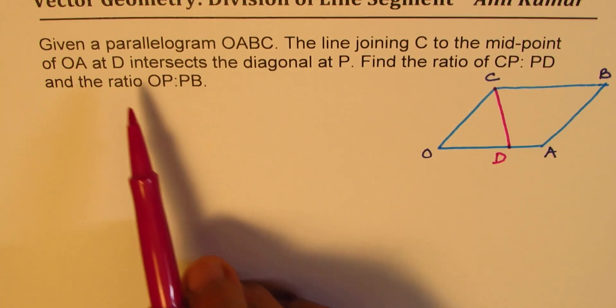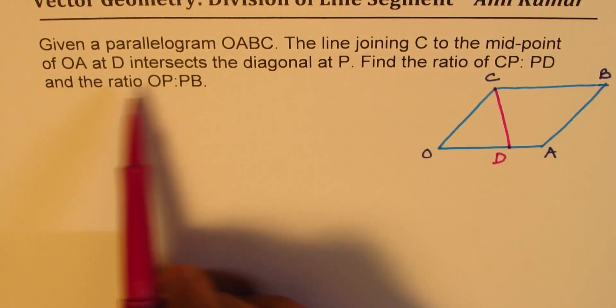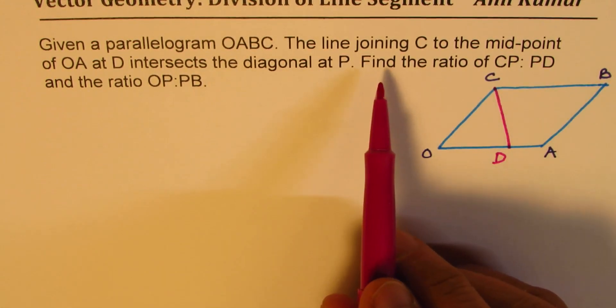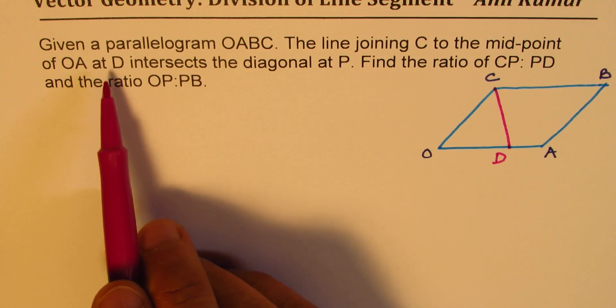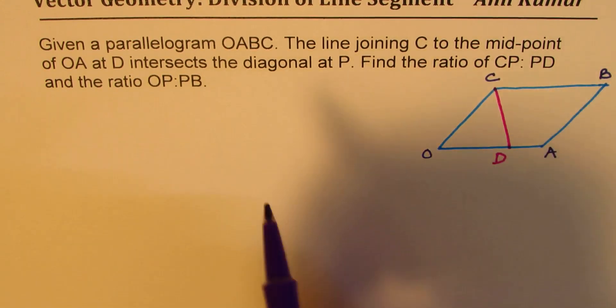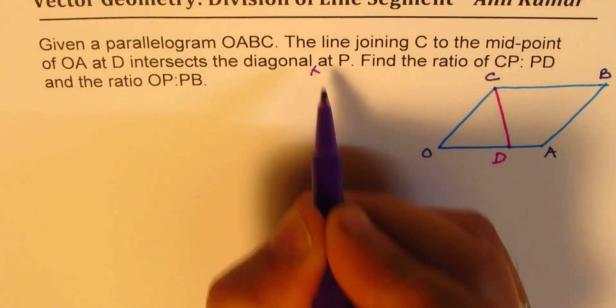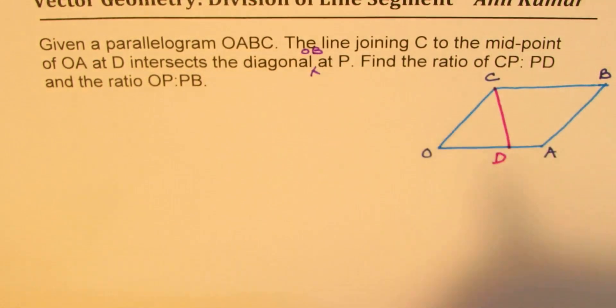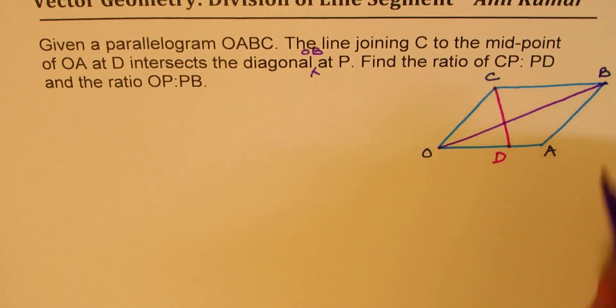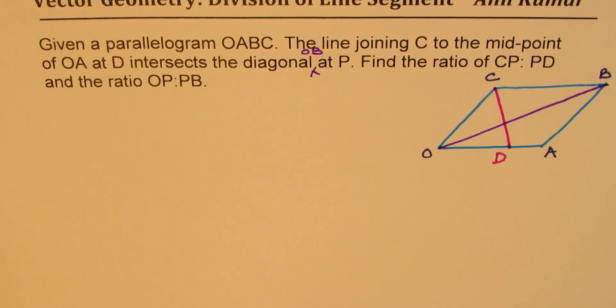Intersects at D. Now, intersects the diagonal at P. So the line joining C to the midpoint of OA at D intersects the diagonal at P. So the diagonal, I should have written diagonal OB. Intersects the diagonal OB at P. So from O, I'm going to draw a diagonal to B. So it is intersecting the diagonal at P.